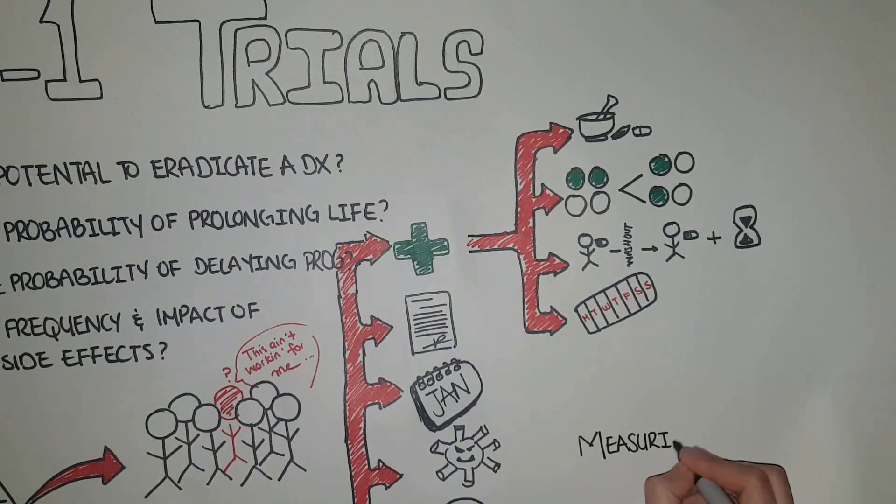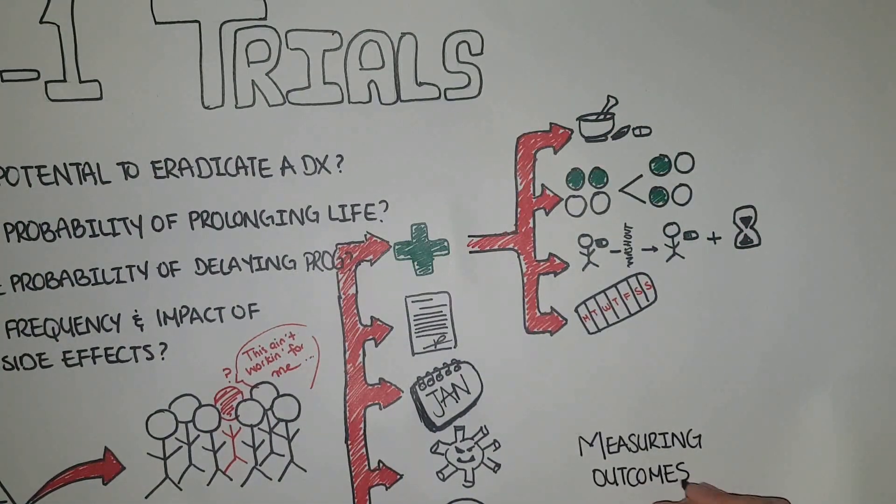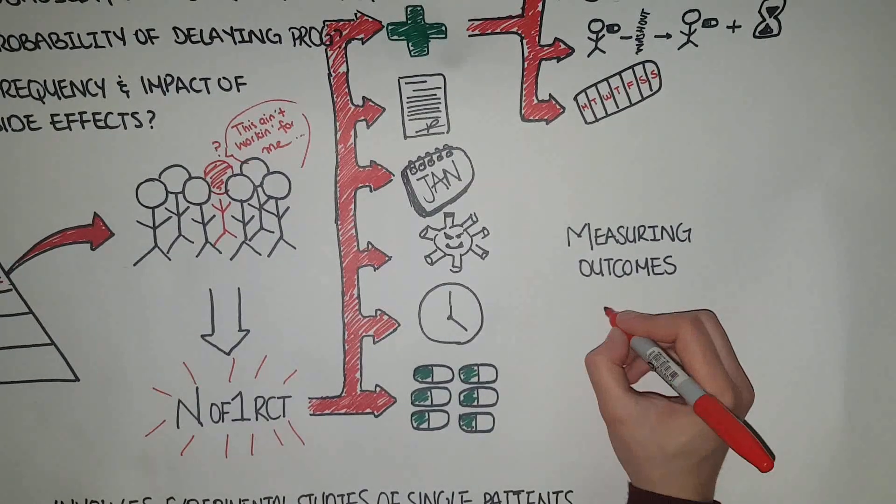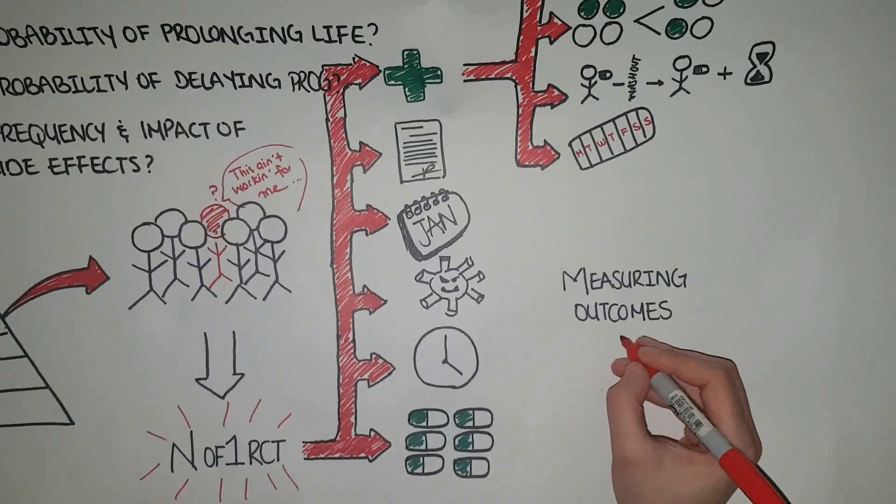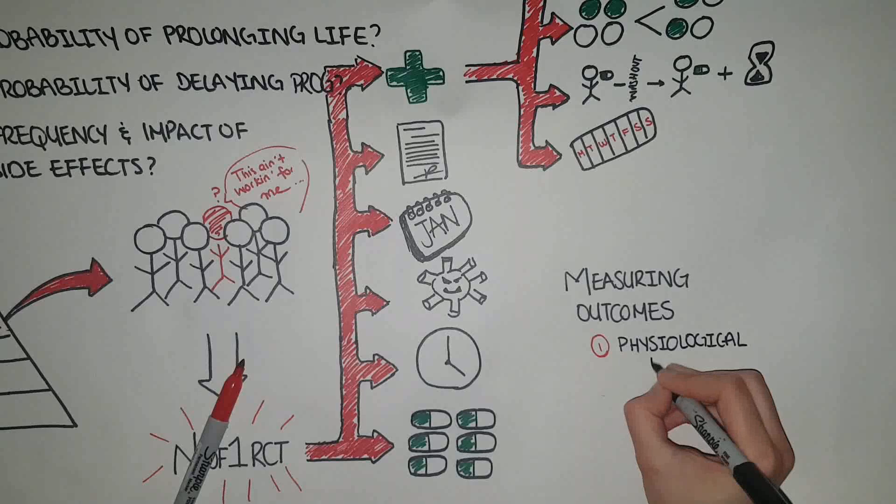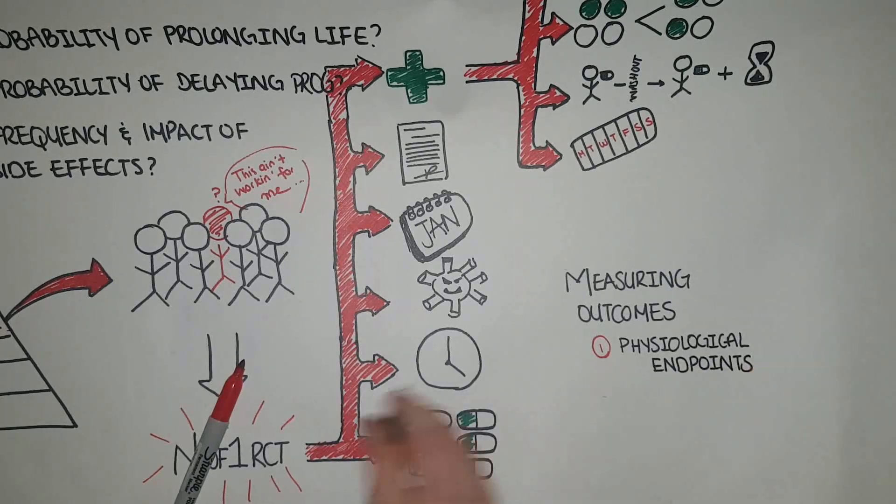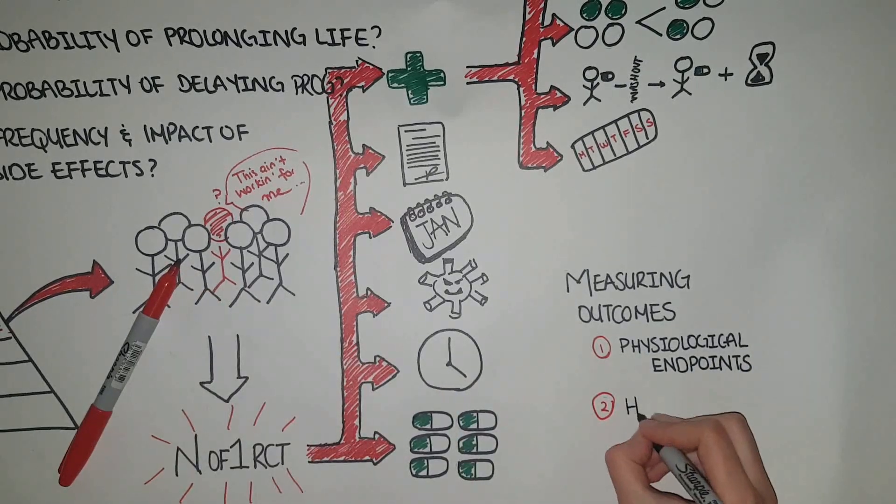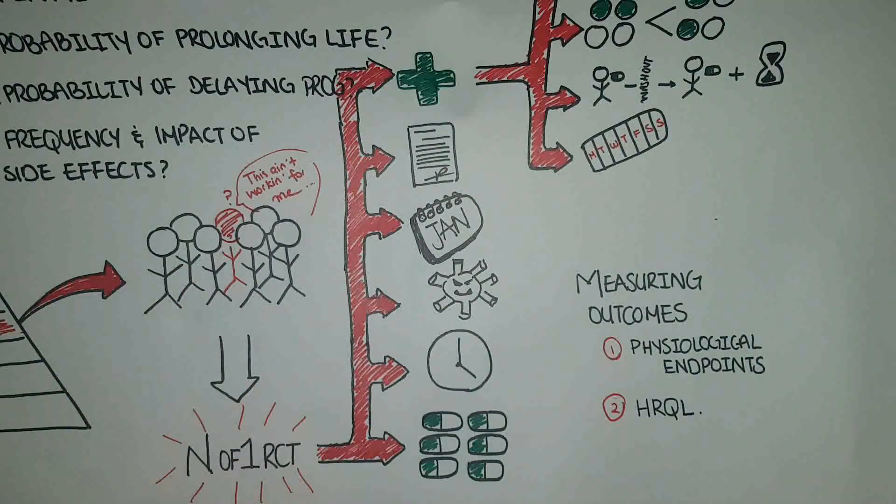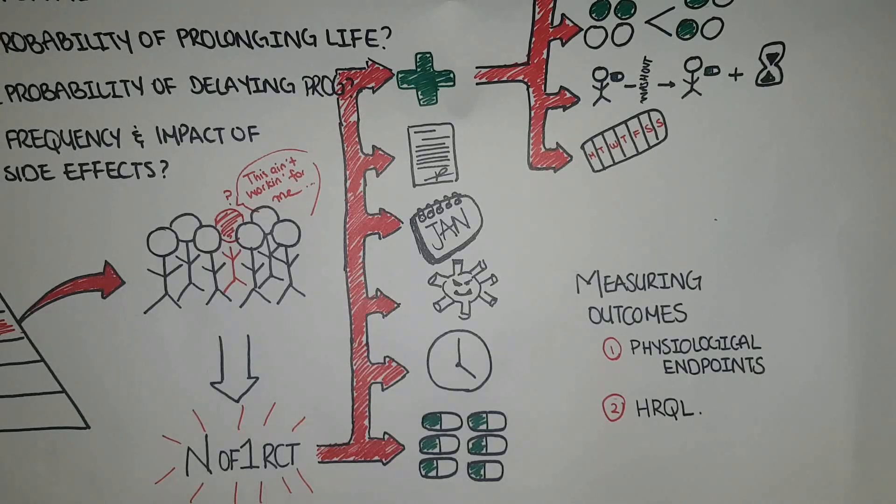There are two main methods to measure the outcomes of an N-of-1 RCT. The first is by using physiological endpoints. However, this has been shown to exhibit considerable intra-individual variability. The other is that of measuring the effect of drug on aspects of health-related quality of life, such as the patient's ability to walk a dog or use the stairs, in addition to psychological well-being and symptom severity.